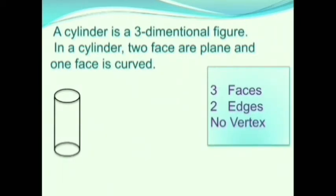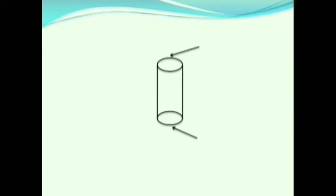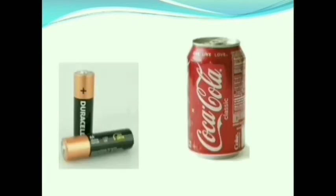Now we will learn about cylinder. A cylinder is a three-dimensional figure. In a cylinder, two faces are plain and one face is curved. It has two edges and no vertex. The arrow marks in the picture show the edges. A shell and a juice can are also examples of a cylinder.